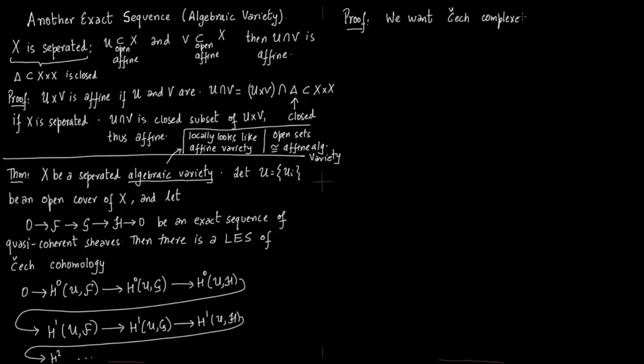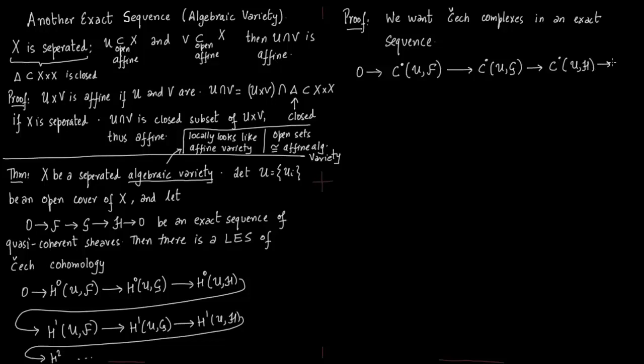If we get this Čech complex on the separated algebraic variety, we are done. We then use the fundamental theorem of homological algebra: given the complex, we form the long exact sequence of cohomology groups. The question is how do we get this complex, and first we examine what this complex essentially looks like.